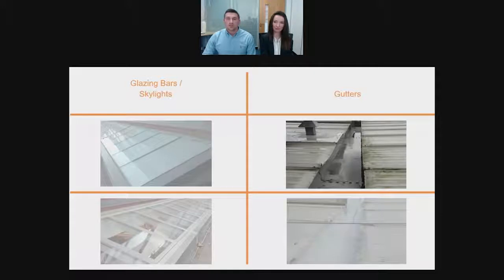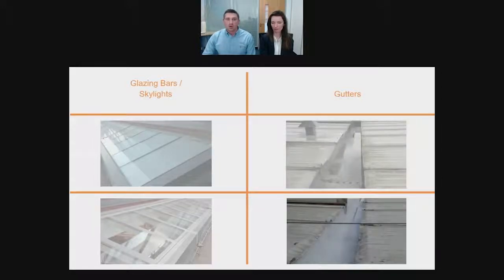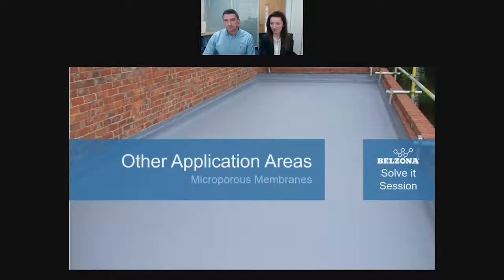Gutters are designed to contain water running off the roof surface, but they tend to leak at joints, through bolt holes, or at the junction of the gutter and the downspouts. A general repair would be to rip out the old gutter and replace it — or a microporous membrane can be applied to create a seamless transition from the roof into the gutter, preventing any water ingress between the gutter and the roof.